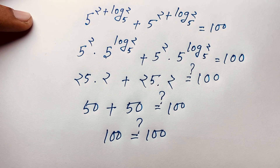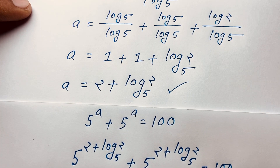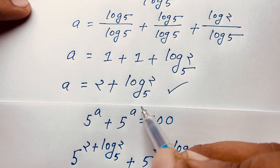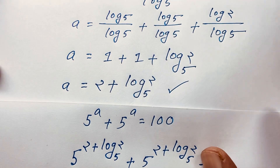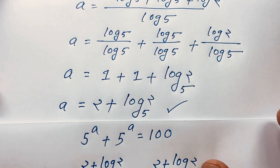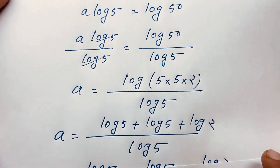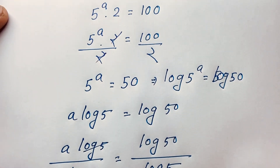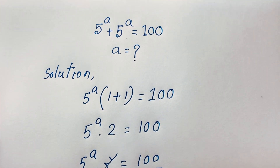So, left hand side and right hand side are equal. You can see here is a is equal to 2 plus log 2 base 5. This is our final answer in this Junior Math Olympiad question. Thank you all. If you enjoyed this video, please subscribe to my channel for other interesting videos. Goodbye, take care.